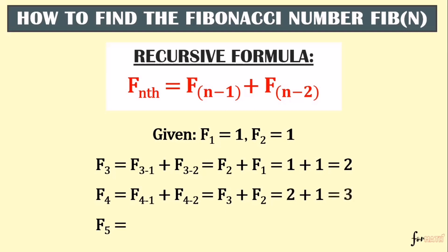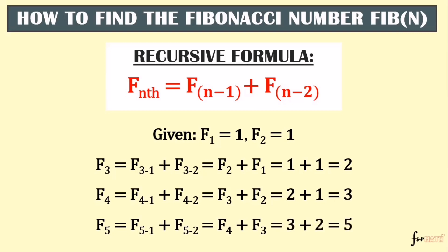For the 5th number, we have F(5-1) + F(5-2), meaning we need the 4th term and the 3rd term. The 4th term is 3 and the 3rd term is 2, so we add 3 + 2, giving us the 5th term equal to 5. Therefore, our sequence is: 1st term is 1, 2nd term is 1, 3rd term is 2, 4th term is 3, 5th term is 5, and so on.